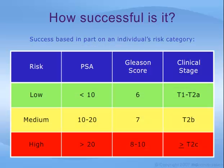The success of cryoablation, like other treatments, depends on an individual's risk category. Patients are divided into three broad categories — low risk, medium risk, and high risk — depending on the chances that their prostate cancer has already spread beyond the confines of the prostate at the time of diagnosis or treatment. Risk is based on a patient's PSA value, the grade of the tumor, and the stage of the tumor.